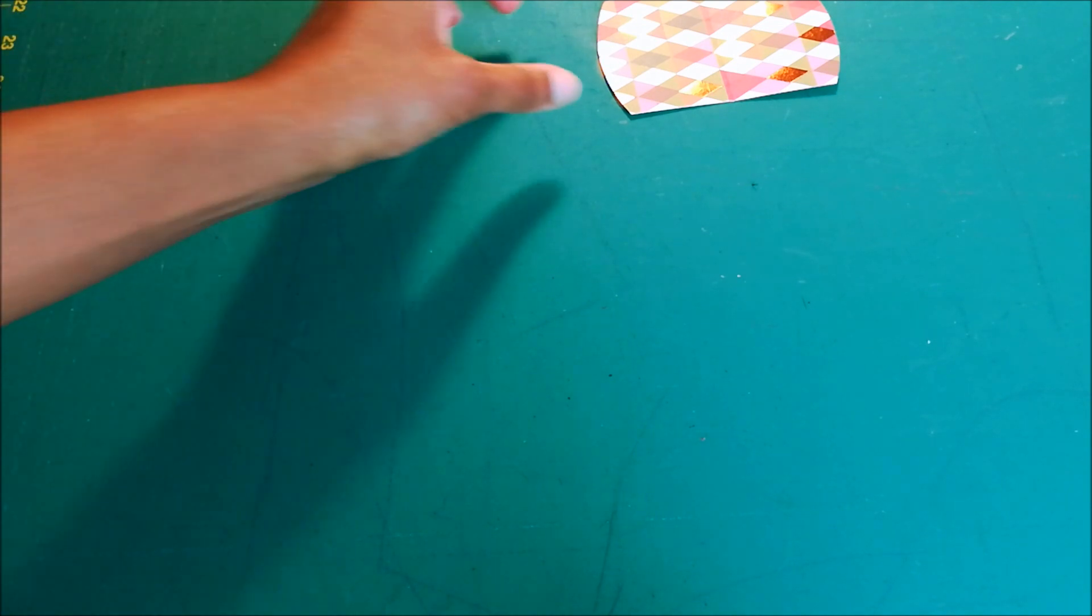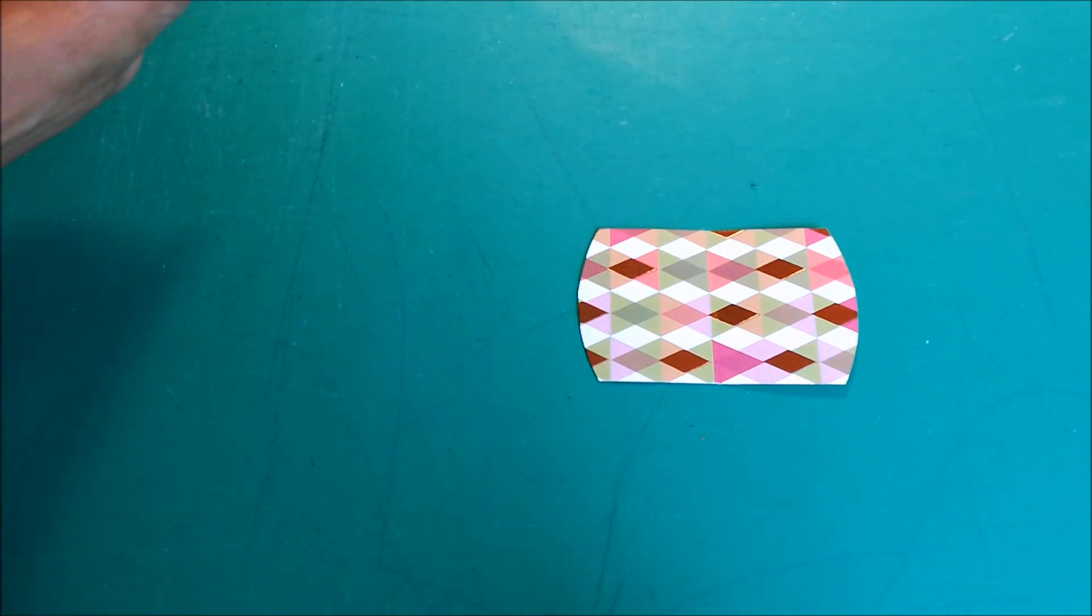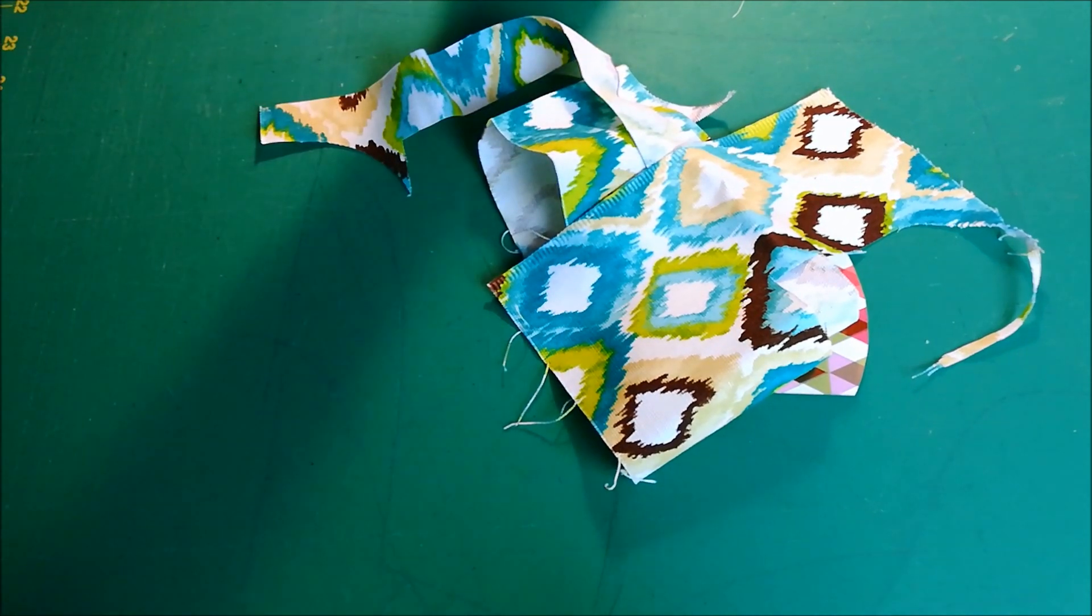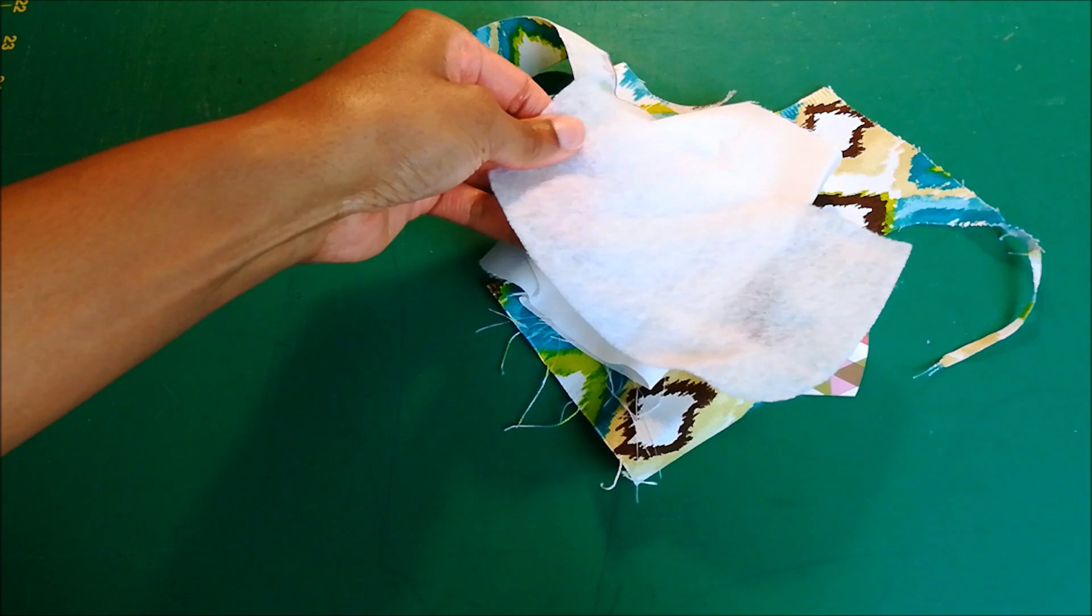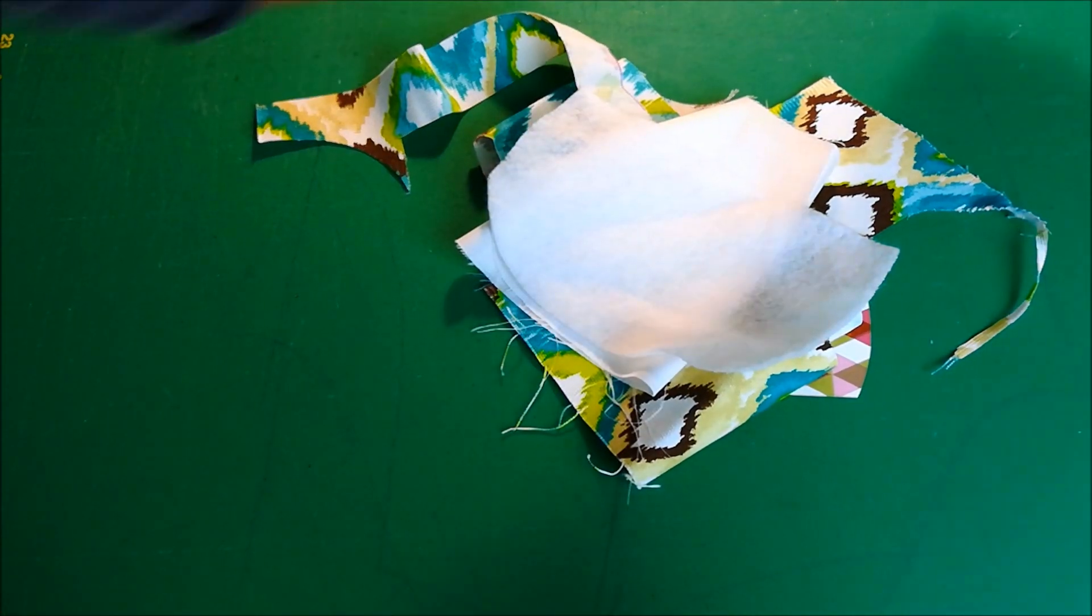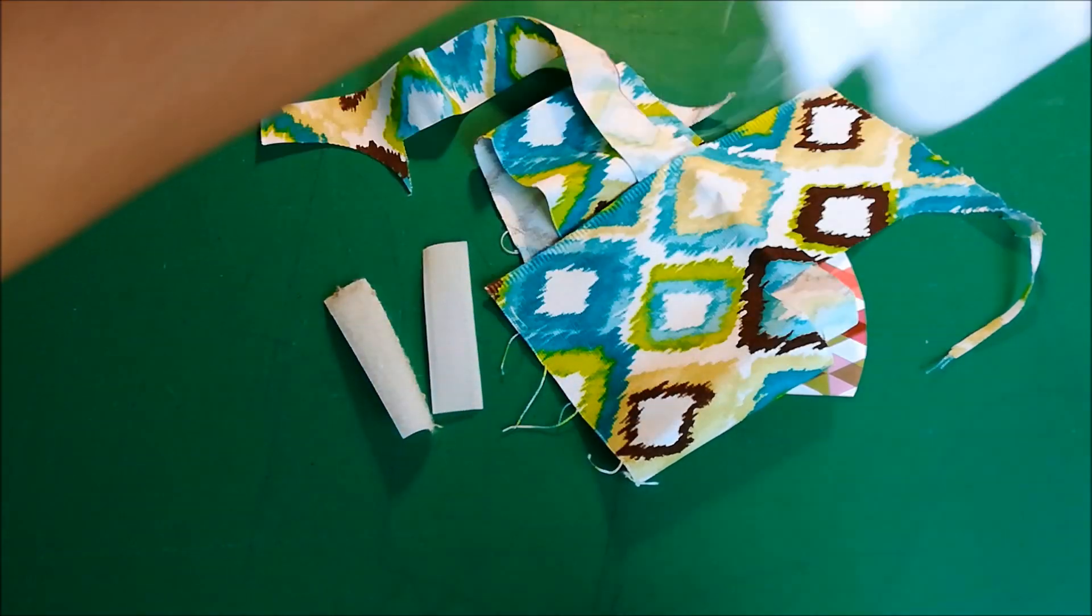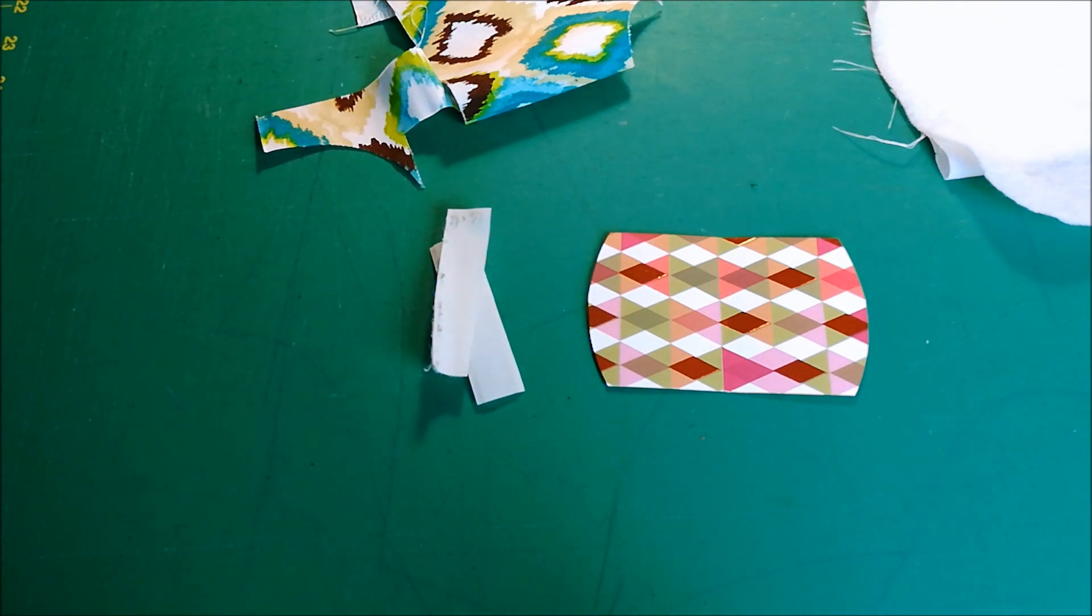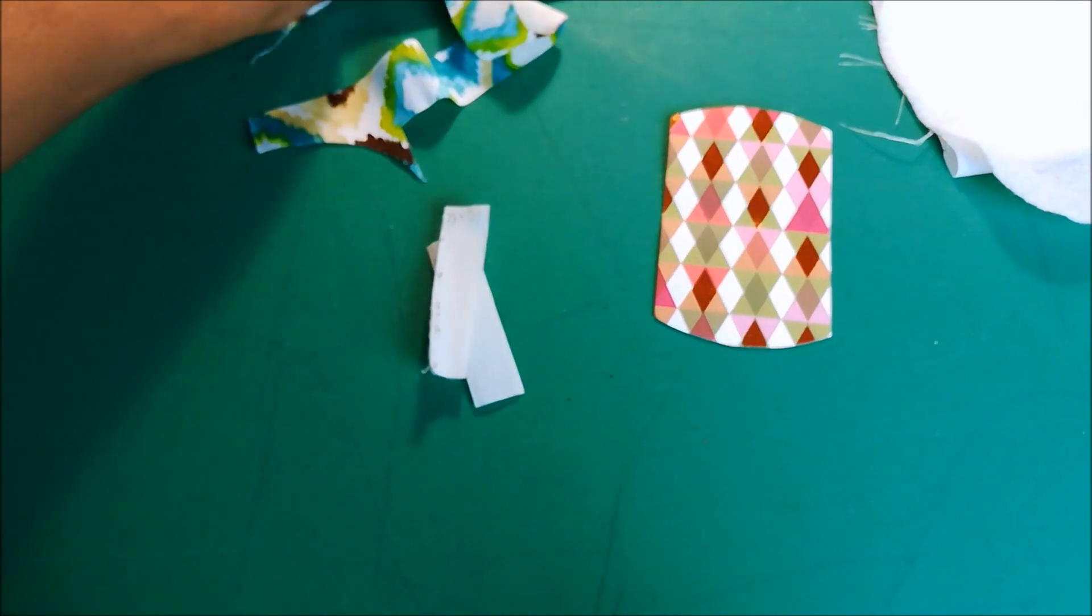So basically I've got my template which you can print out online, I've got my exterior fabric, some lining fabric, a little bit of fusible interfacing, and some velcro. So I'm just basically gonna follow the steps on the tutorial and we'll see what happens. Let's get started. First I'm going to go ahead and cut out my template out of my exterior fabric, my lining fabric, and my interfacing.